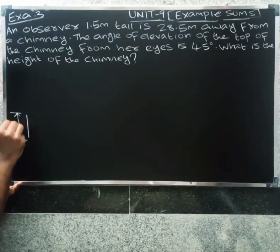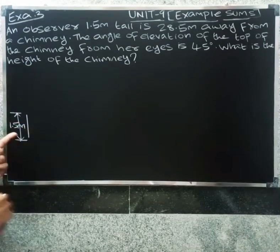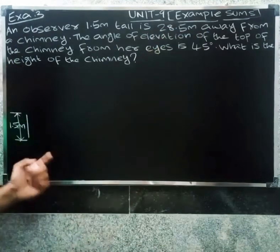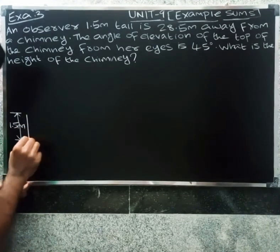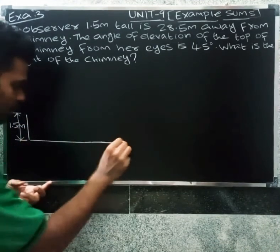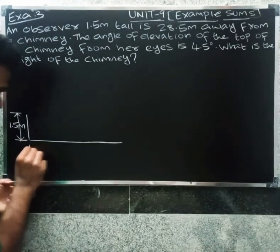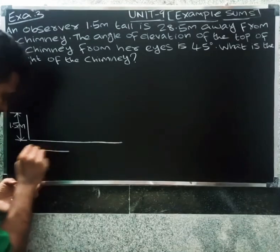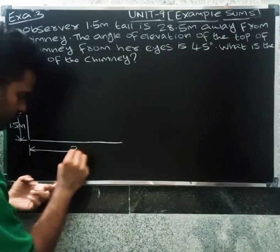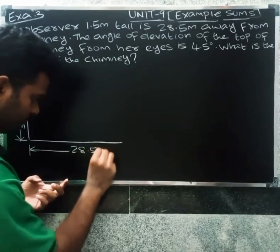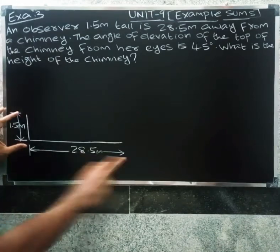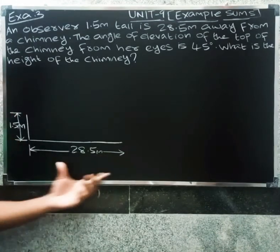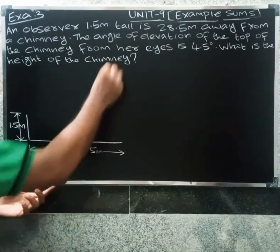So the observer is 1.5 meter tall and is 28.5 meter away from the chimney — the distance between the observer and the chimney is 28.5 meter.